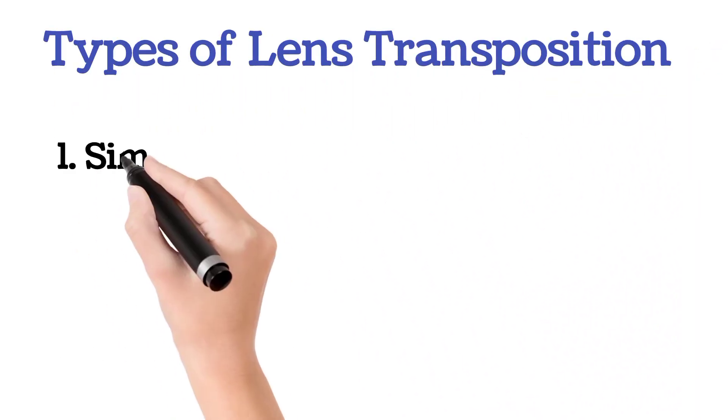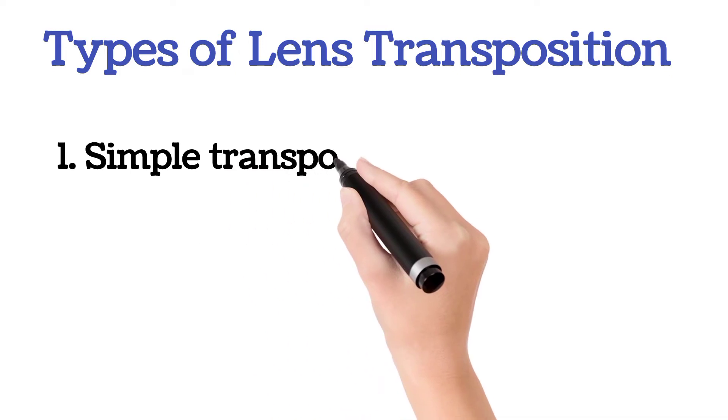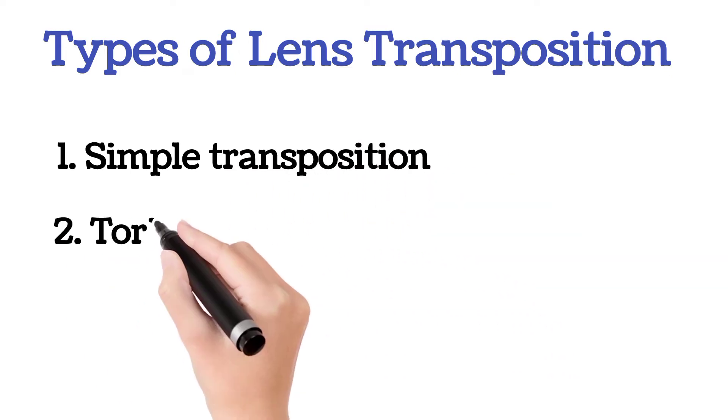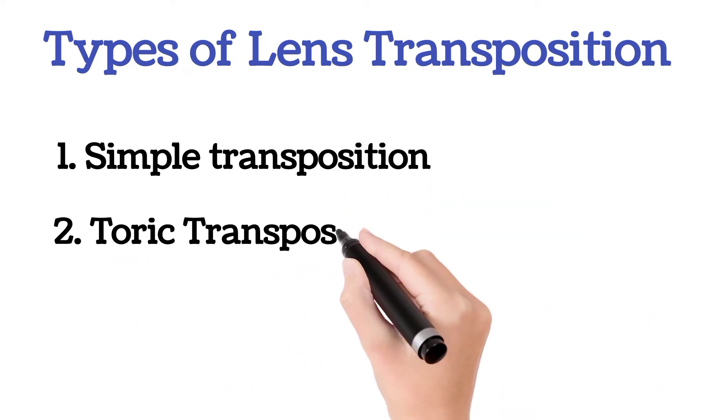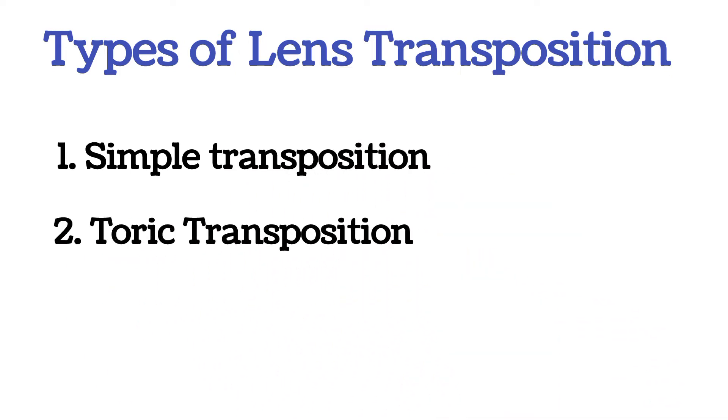There are two basic types of lens transposition: simple transposition and toric transposition.